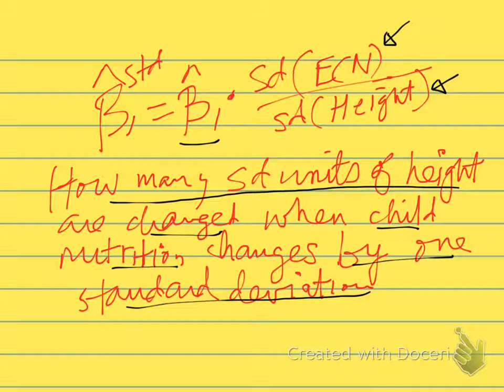So by transforming the coefficients into standardized coefficients, they're all in units of standard deviations of the relevant variables, and so it's maybe easier for us to interpret what the magnitude of the effect is when we calculate standardized coefficients.